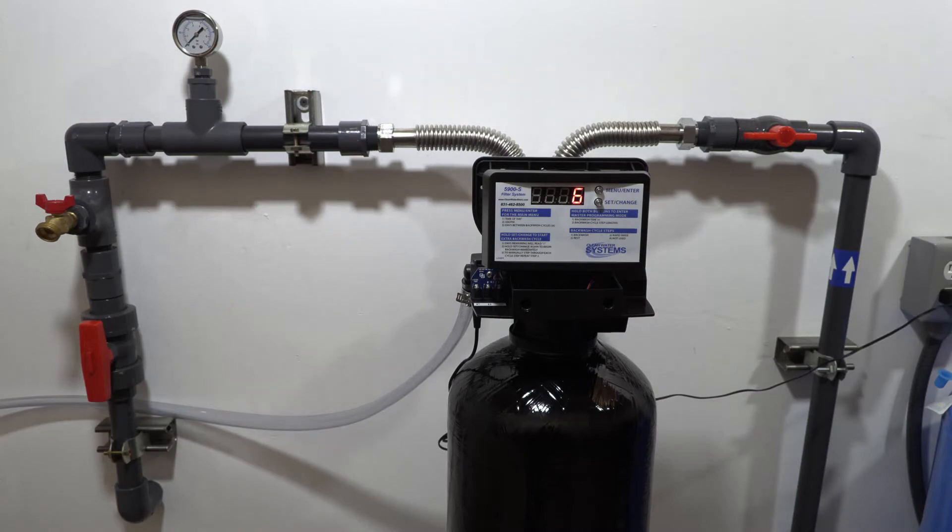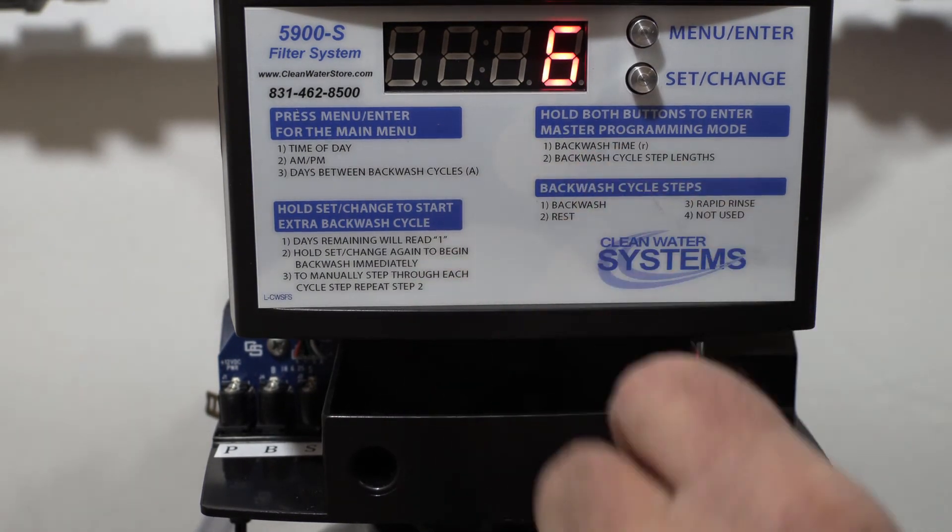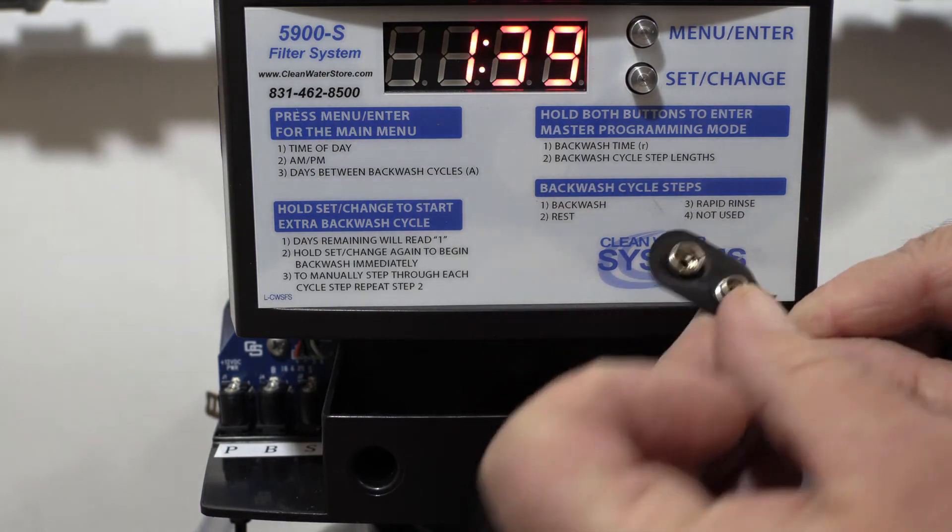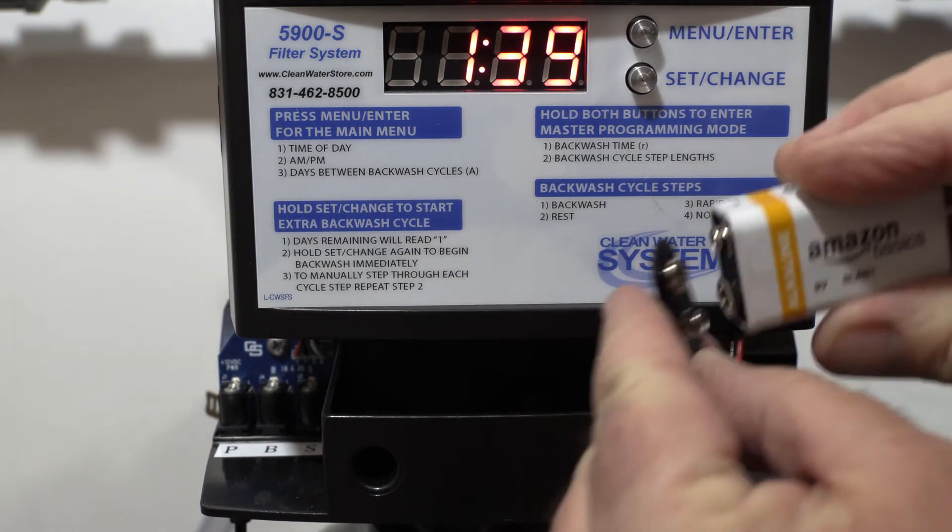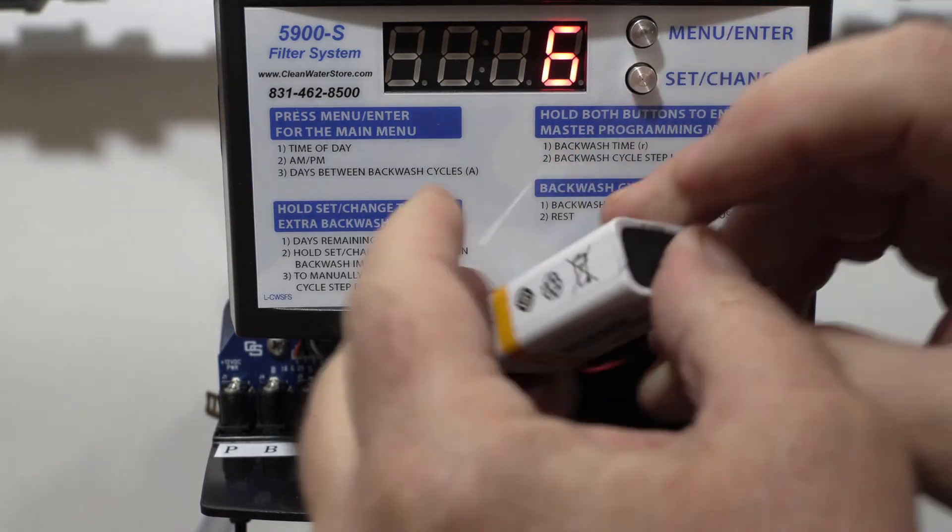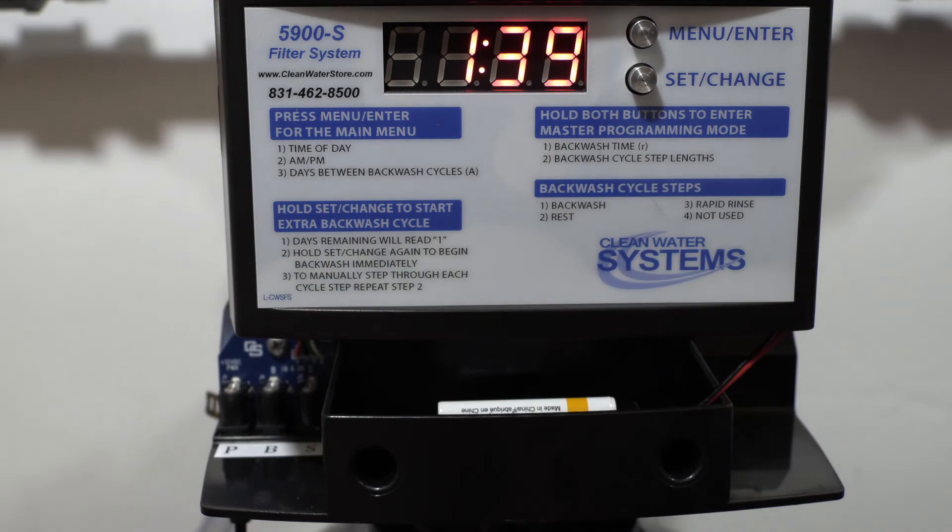And the last thing I wanted to show you - we want to install our 9-volt backup battery in case we were to lose power. That's located, there's a little battery clip here, a little shelf. You just plug a standard 9-volt battery in and tuck the battery right down in there.